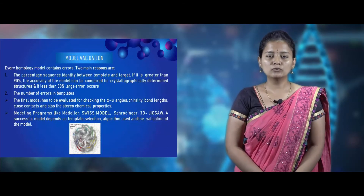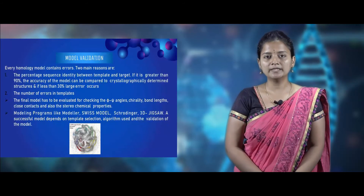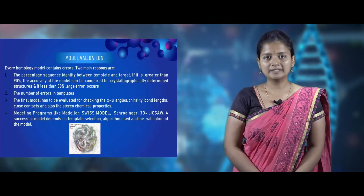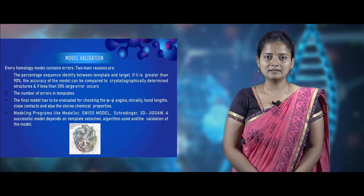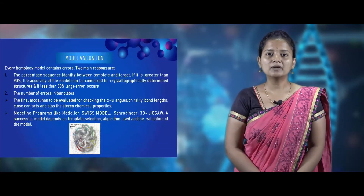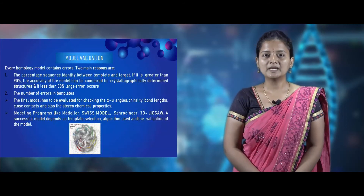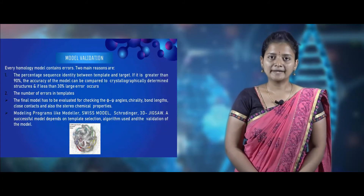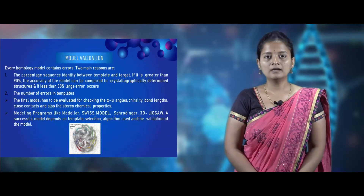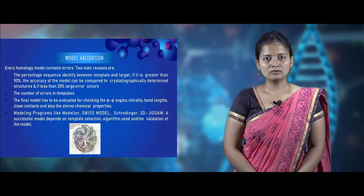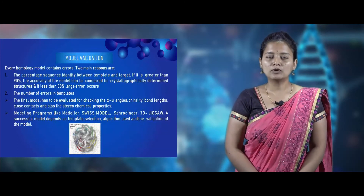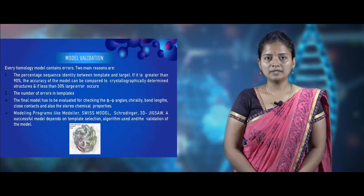The last and final step in homology modeling is model validation. Every model tends to have errors for two main reasons: first, if the percentage identity between template and target sequence is greater than 90%, the model can be compared with the crystallographic determined structure, but if identity is less than 30% it will tend to have errors. The second reason is the number of errors in the template. The final model must be evaluated for phi and psi angles, chirality, bond length, close contacts, and other stereochemical properties. Tools like MODELLER, SWISS-MODEL, Schrödinger, and 3D-Jigsaw can be used for homology modeling.